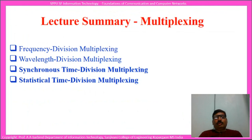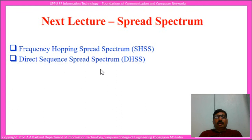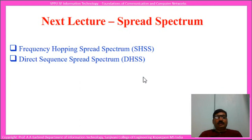In this lecture we discussed time division multiplexing — particularly synchronous TDM and statistical TDM. In the next lecture we shall cover frequency hopping spread spectrum (FHSS) and direct sequence spread spectrum (DSSS).